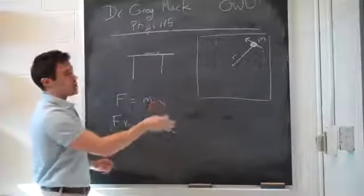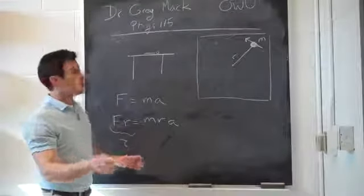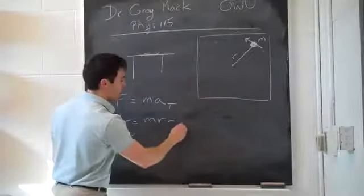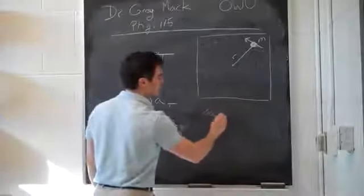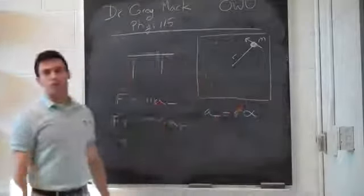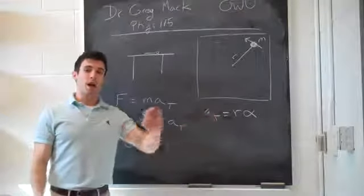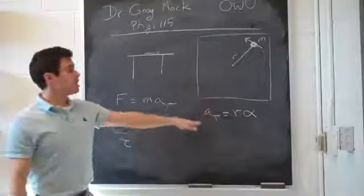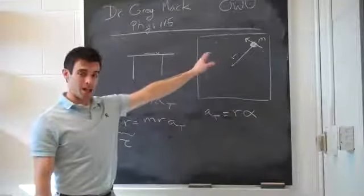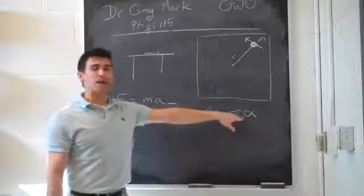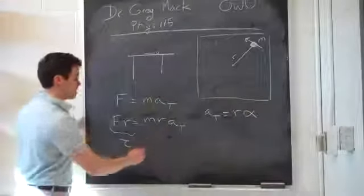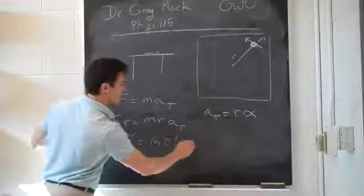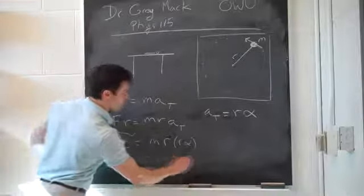Looking at the tangential acceleration, not the centripetal acceleration part — we technically should have a subscript t on the a. Remember that a sub t equals r times alpha, just like v sub t equals r times omega, and arc length s equals r times theta. The linear acceleration in the tangential direction equals the radius times the angular acceleration. So the torque equals m times r times r times alpha, or m r squared times alpha.